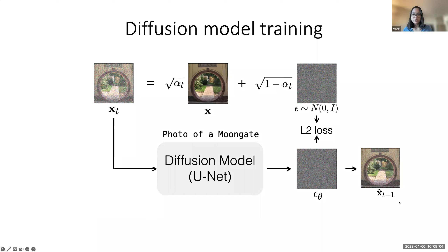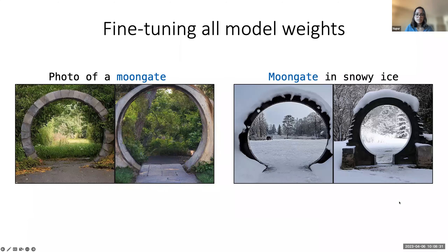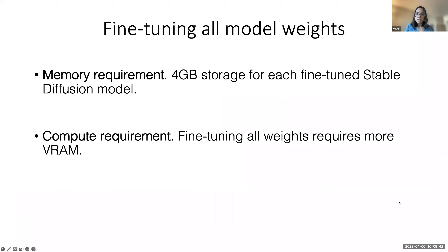Given this training pipeline, to add a new concept of Moongate, we can simply fine-tune the model using the standard loss I described. Let's look at some results with this method of fine-tuning all model weights. We see that the model now understands the concept of Moongate and generates new images consisting of this concept. It can even generalize — if we want Moongate in a snowy scene, it can generate these images as well. So everything is good. But fine-tuning all model weights is really quite memory and compute intensive.